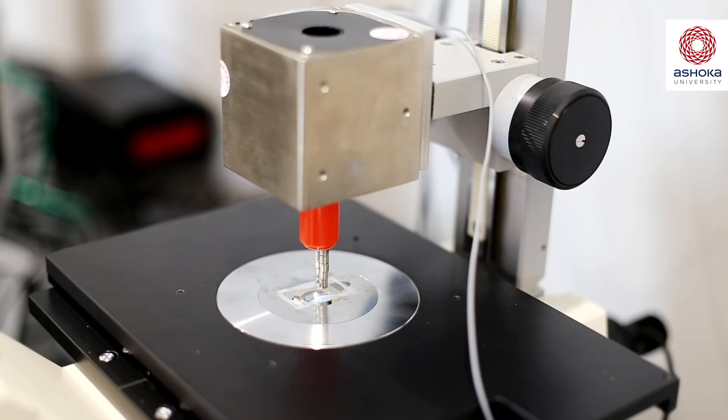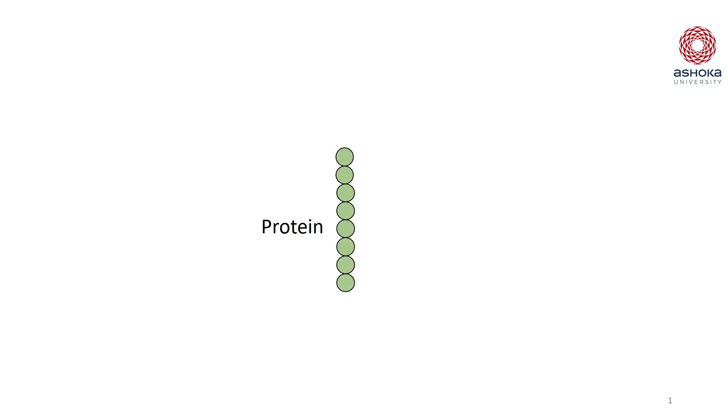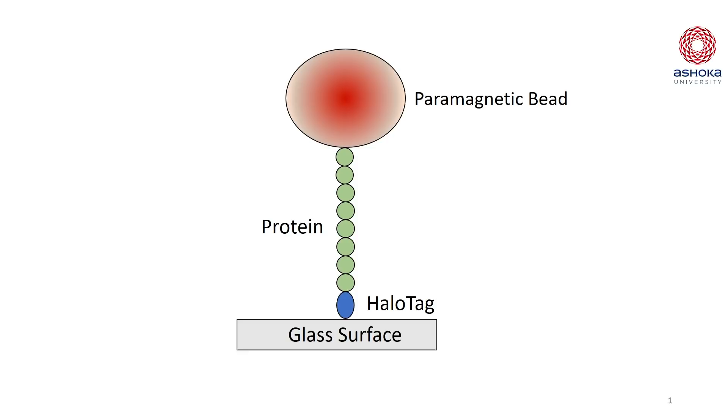For the CMT, an octamer of the same protein is used. One end of the protein is stitched to the glass using halo tag chemistry, while the other end is stitched to a paramagnetic bead using biotin streptavidin chemistry.